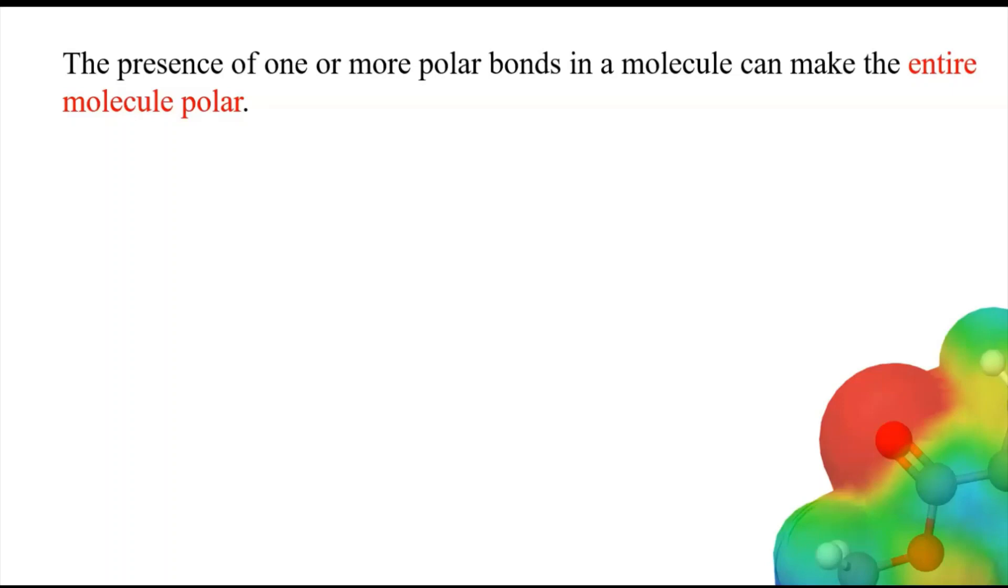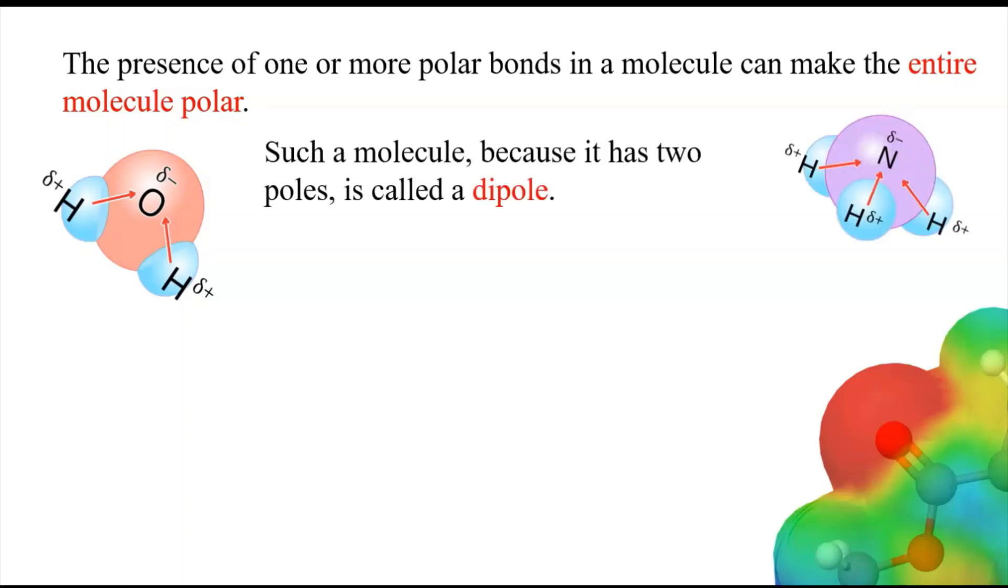One other thing of note is that if you have one or more polar bonds in a molecule, you can make the entire molecule polar. For example, water, we pointed that out earlier. Water is a polar molecule. Another one is ammonia. You can see on the water and the ammonia both, you've got one highly electronegative atom.